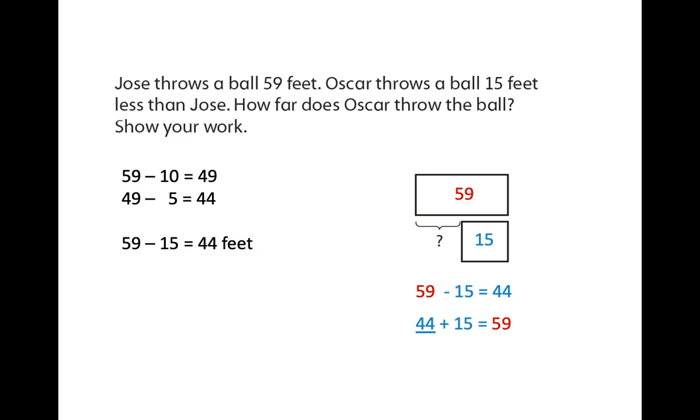Using another strategy that we talked about, we can use a bar model. We started at 59 feet while 59 take away that 15 is 44. So that missing number is 44. I'm able to double check it by doing a fact family. I know 44 plus 15 equals that 59, that bigger number up on top.